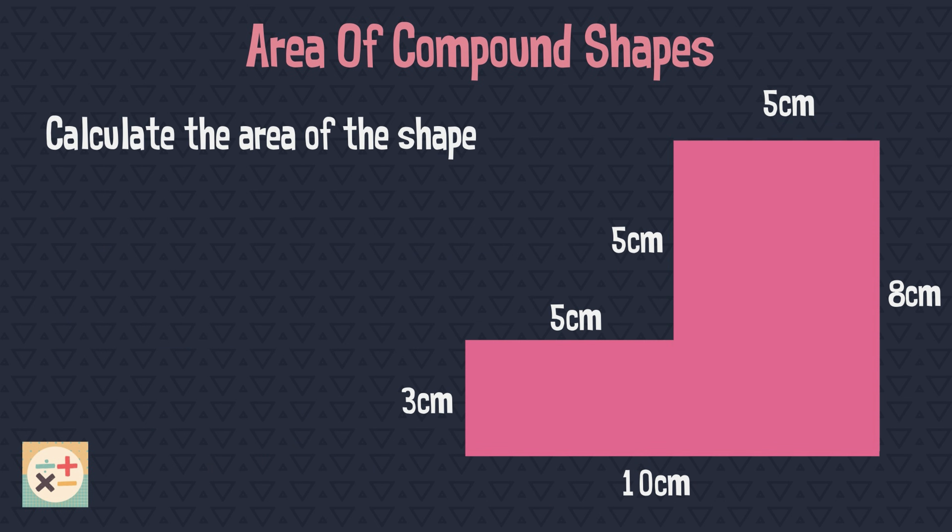Let's have a look at an example. First we need to decide how we are going to divide the compound shape into basic shapes. Here we have split the shape into two smaller basic shapes and have labelled them A and B.